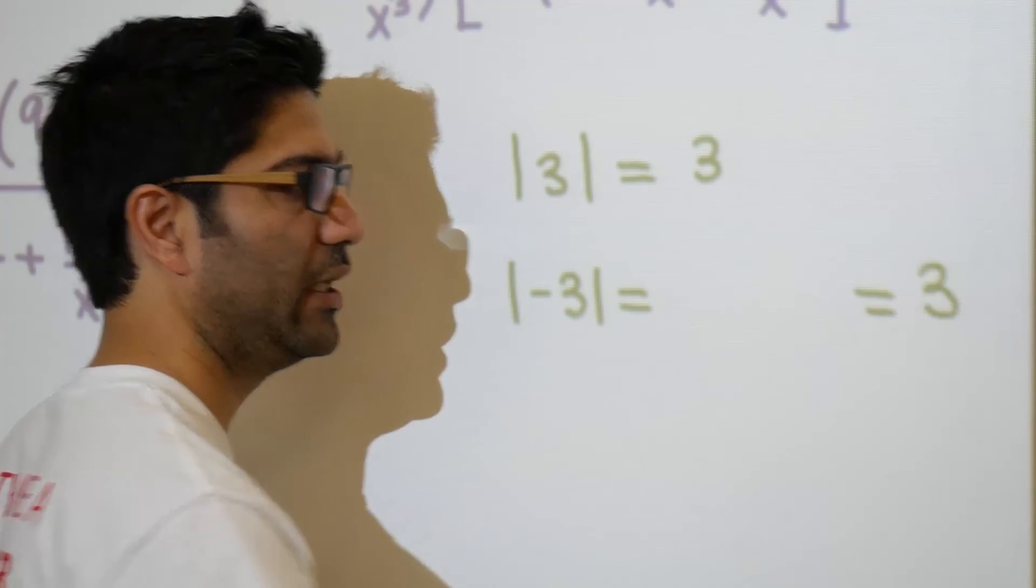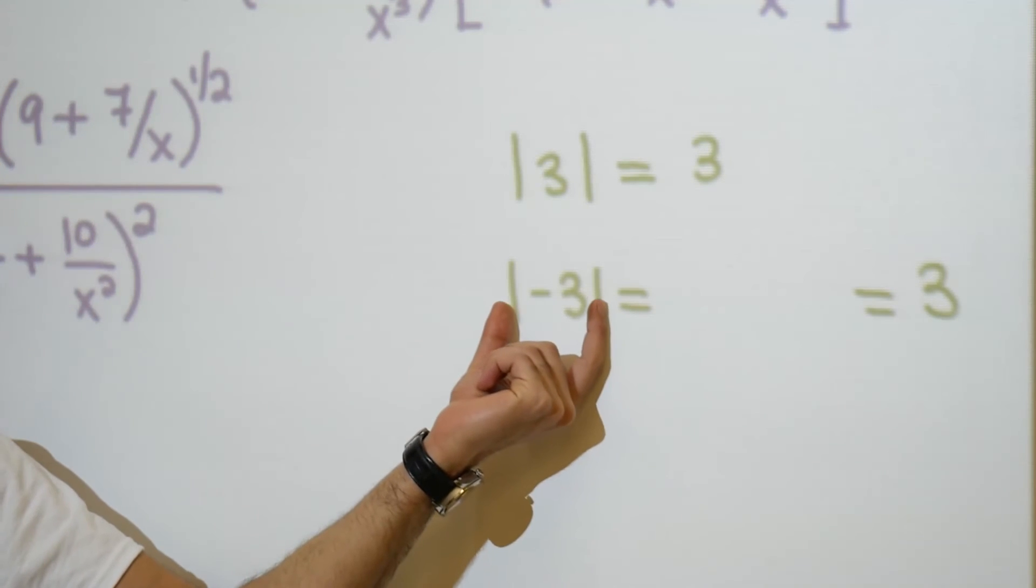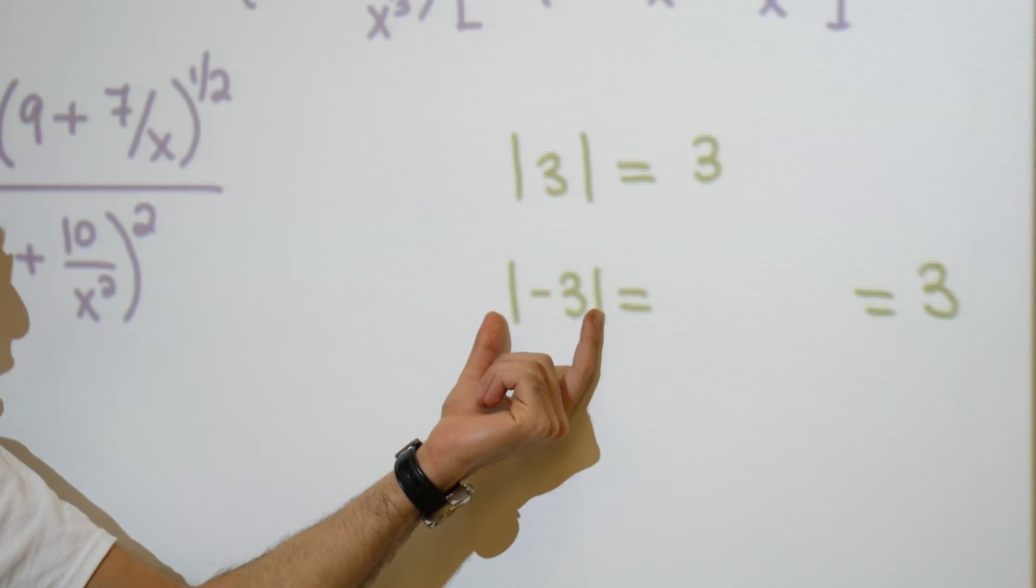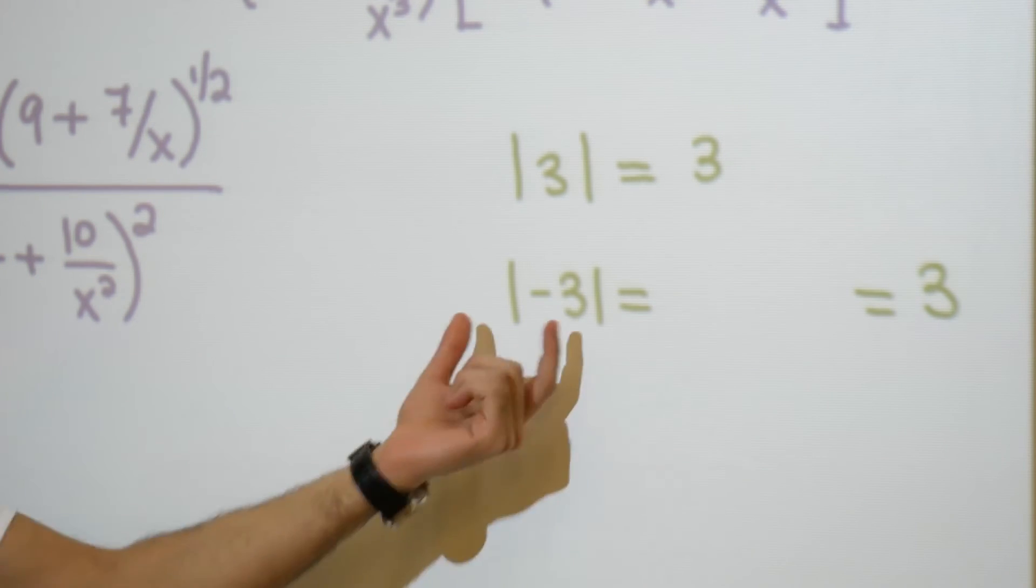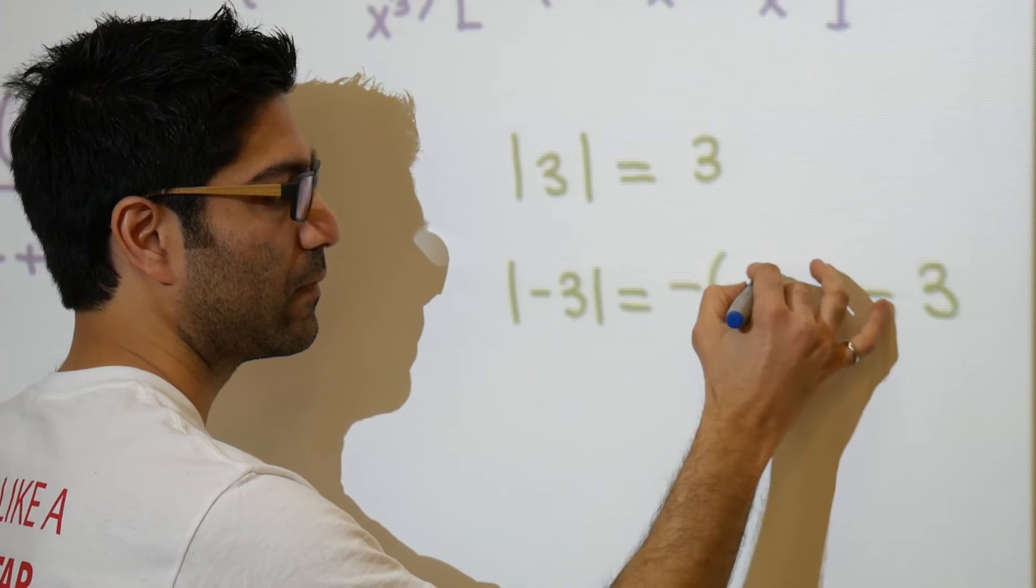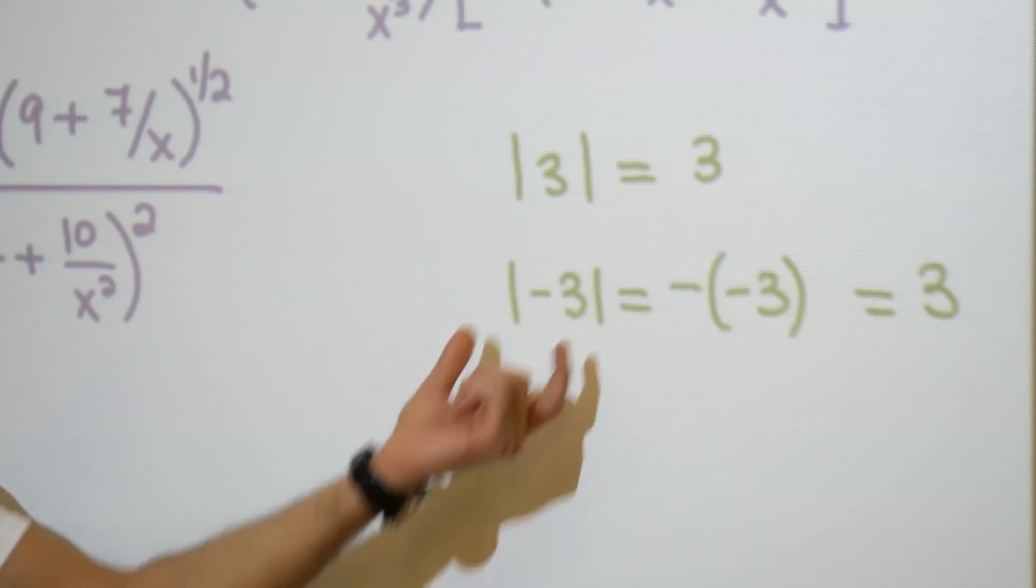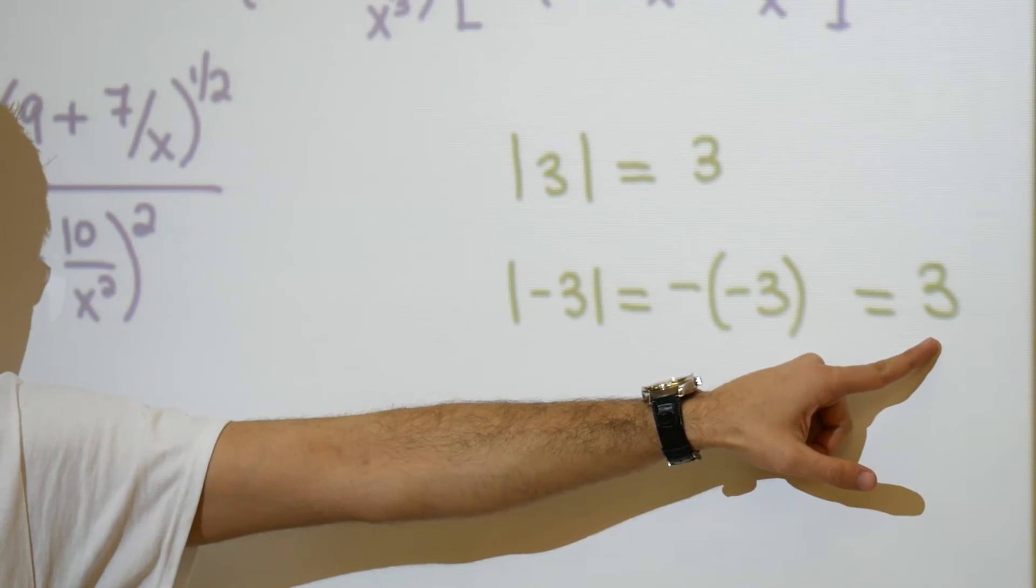However, it becomes a little bit more interesting when the value inside the absolute value happens to be negative. We understand here our answer is also going to be positive 3. The question becomes, can I achieve the exact same result without having these absolute values? And the answer is yes. We can remove these absolute value brackets and replace them with a negative sign.